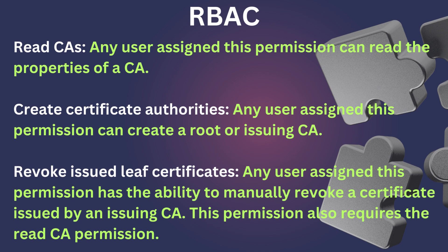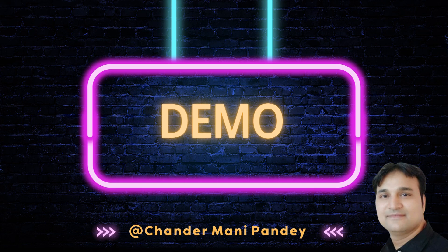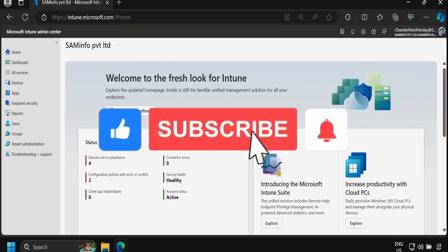Before the demo, let's quickly talk about role-based access control. Currently three types of permissions are available to assign to custom Intune roles. These permissions enable users to view and manage CAs in the admin center, and they are: read-only CA, create certificate authorities, and revoke issued leaf certificates.